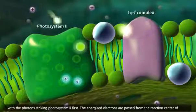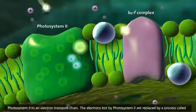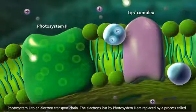The energized electrons are passed from the reaction center of Photosystem II to an electron transport chain.